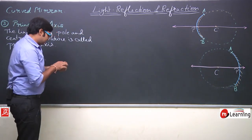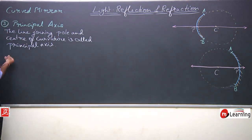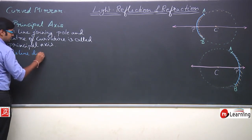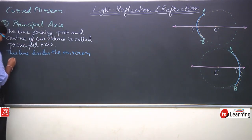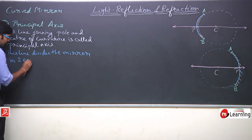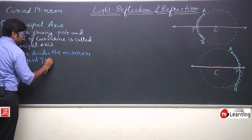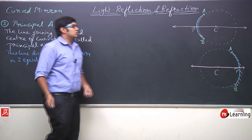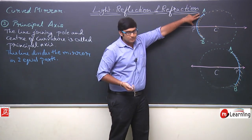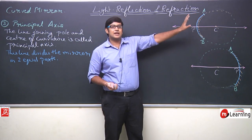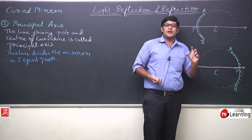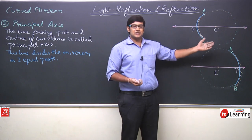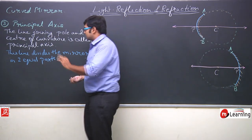What is the special property of this line? This line divides the mirror in two equal parts. For example, if you look at it, AP and PB are both equal parts because P is the pole. So this principal axis is dividing this mirror into two equal parts.